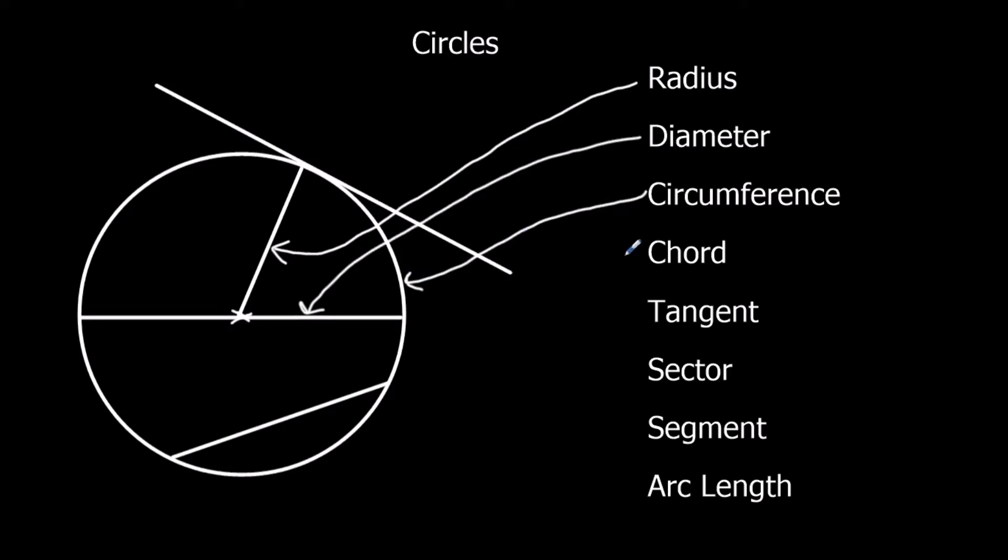A chord is a line that goes from one edge of the circle to the other, but it doesn't go through the center. Otherwise that would be a diameter. So it goes from one side to the other, and it's just a straight line that's called a chord.